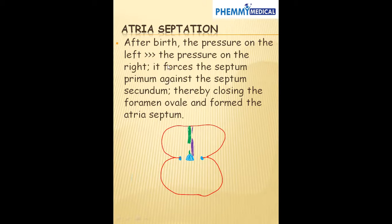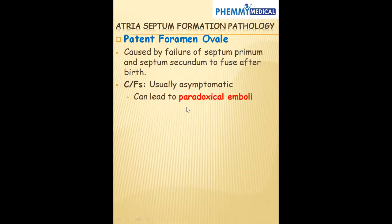After the child is born, the pressure on the left side increases above the pressure on the right side. This pushes the septum primum against the septum secundum, thereby closing the foramen ovale.